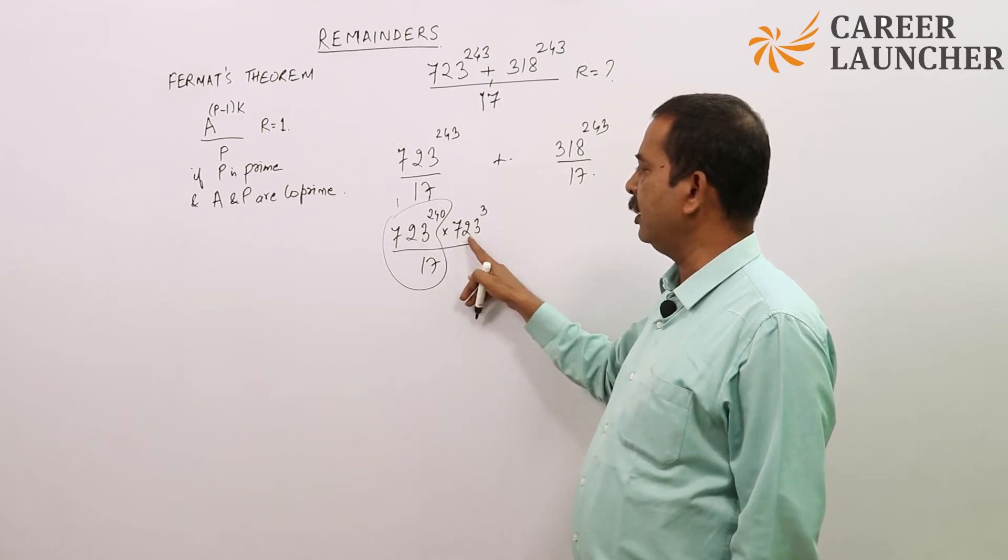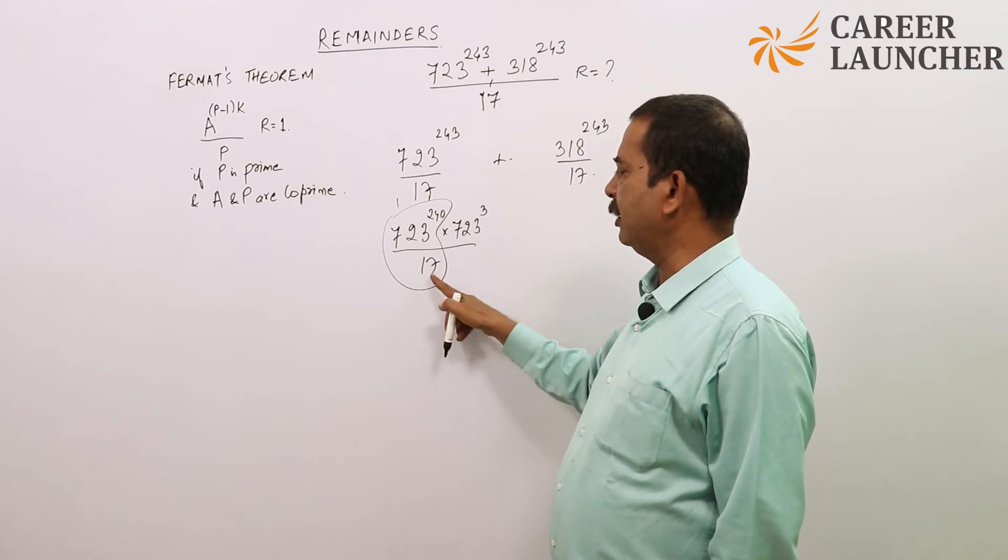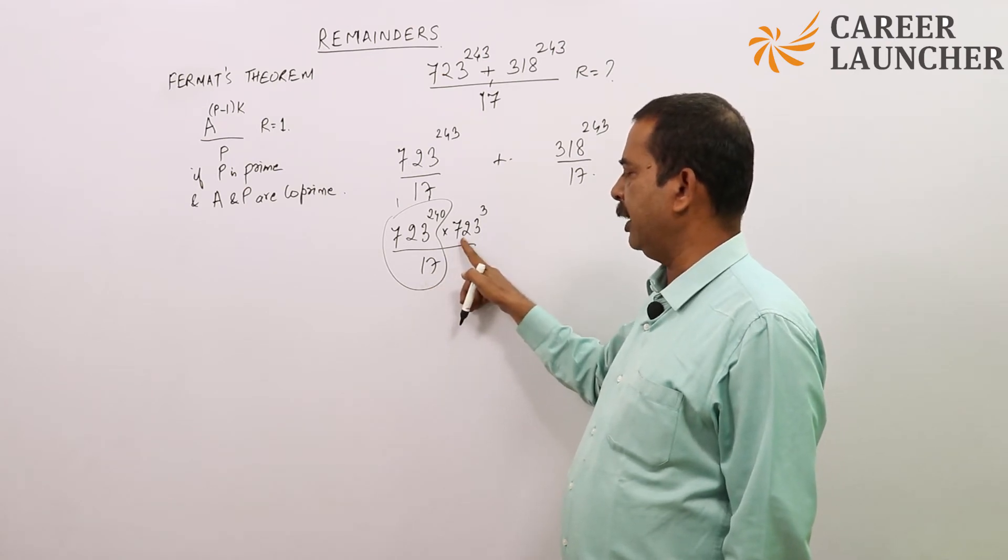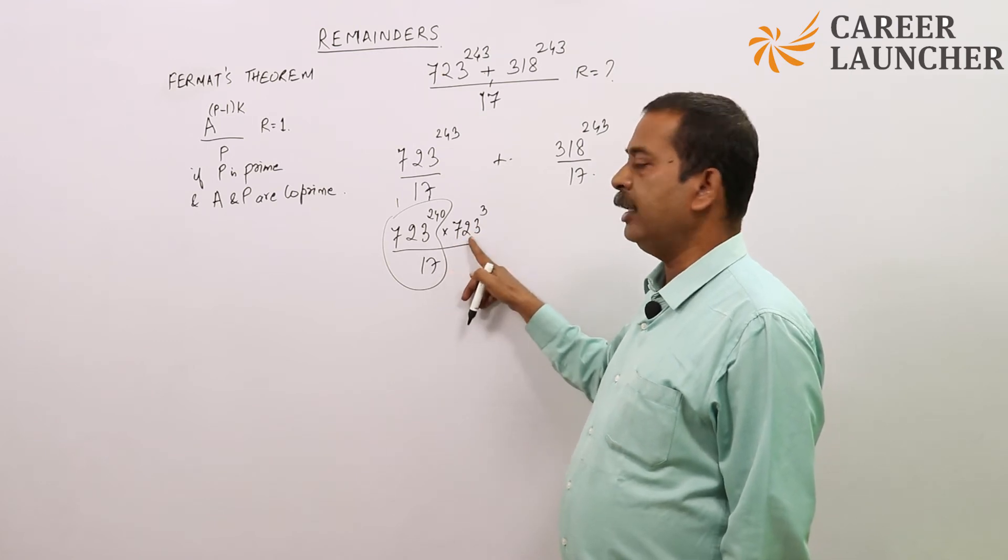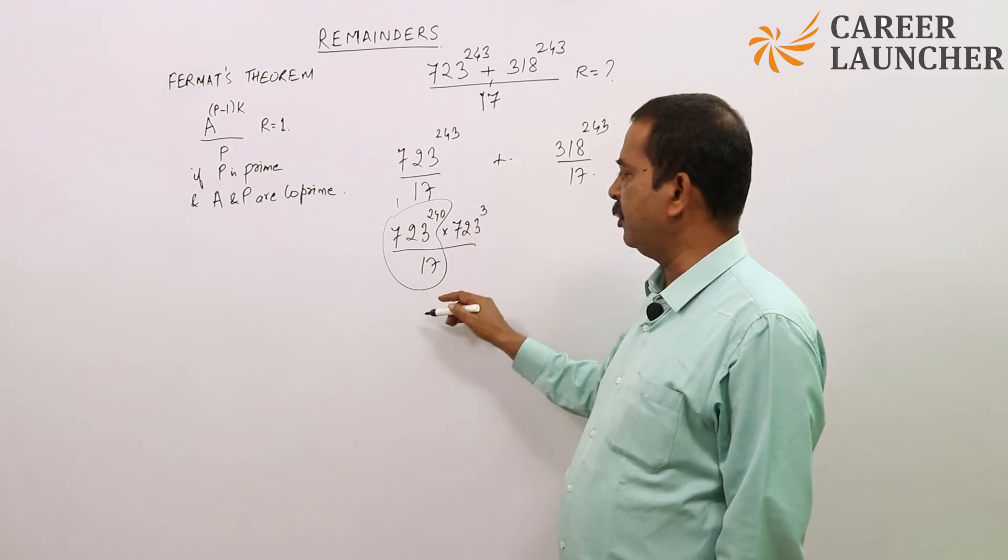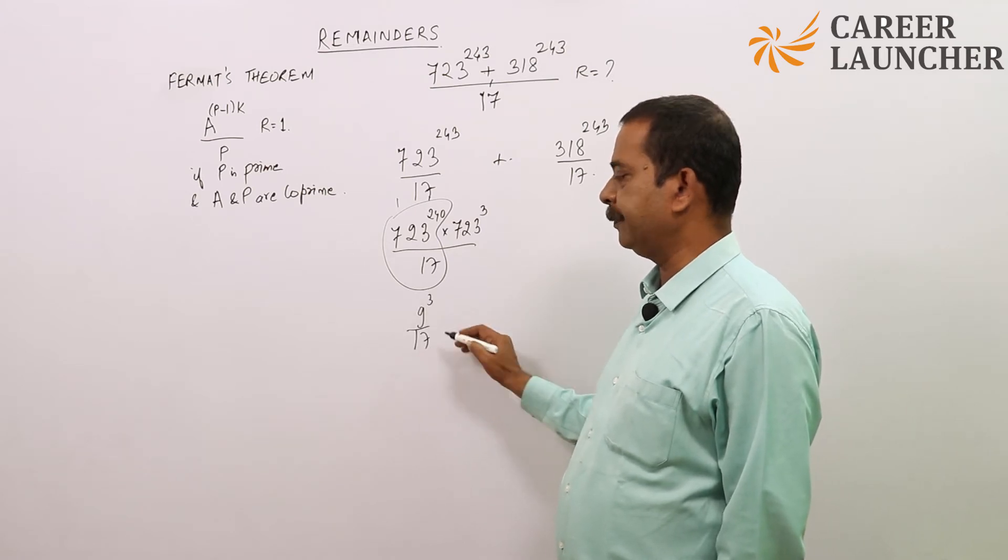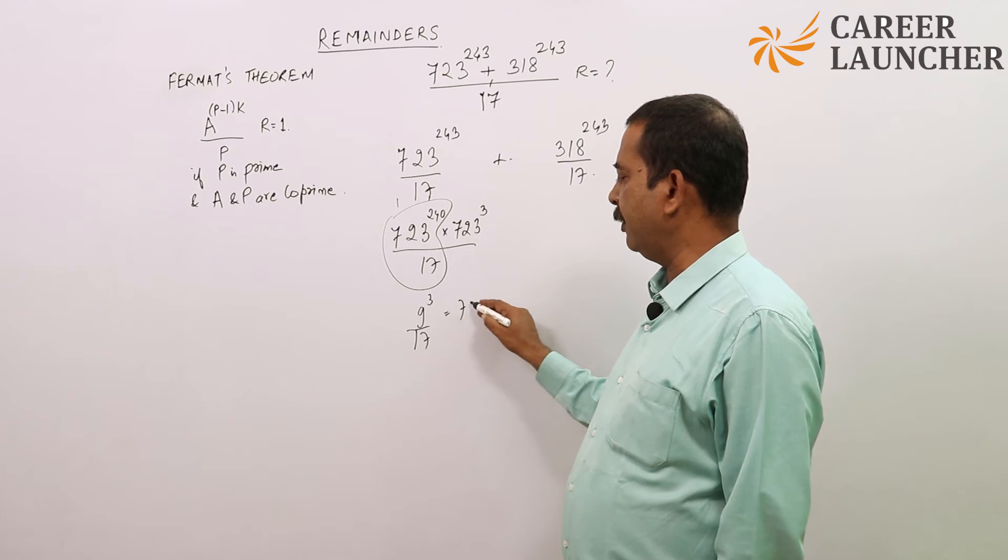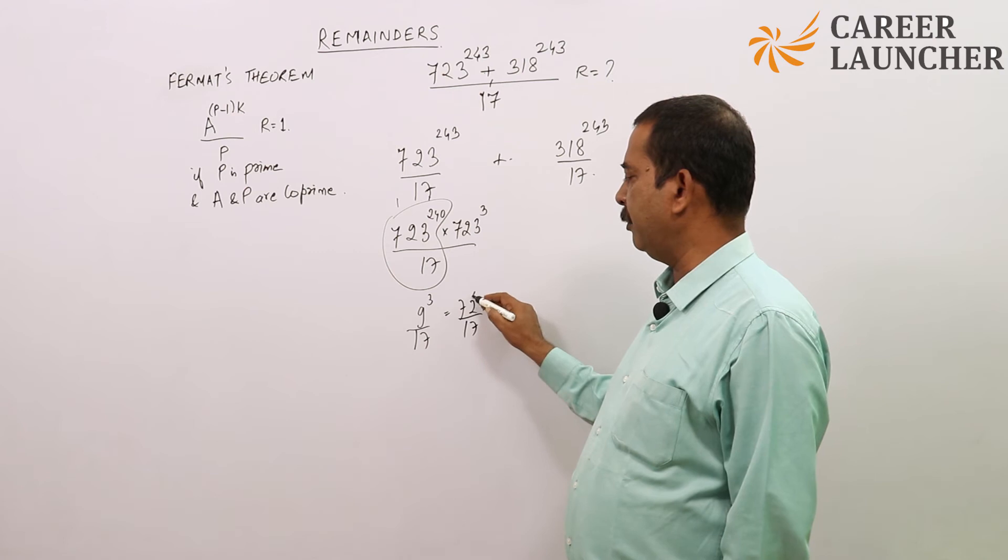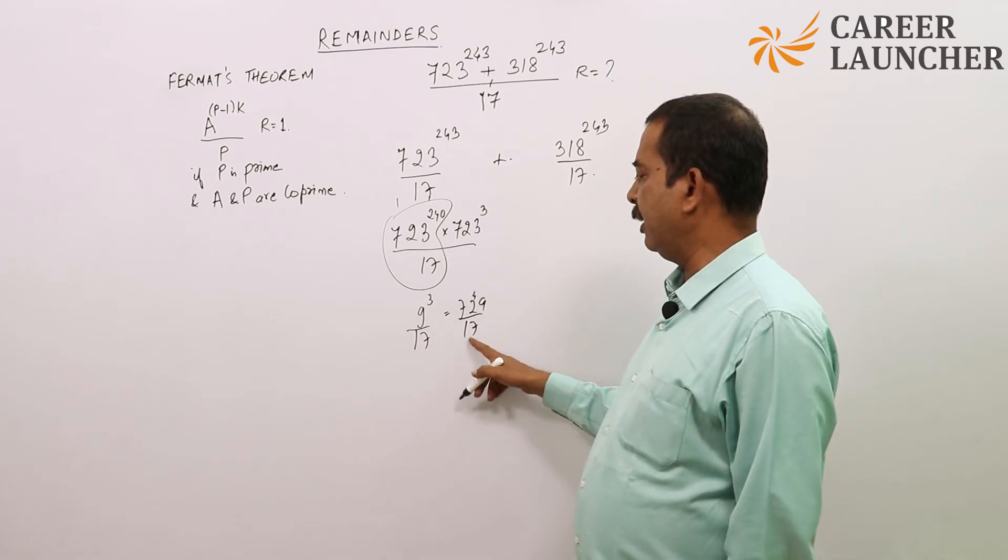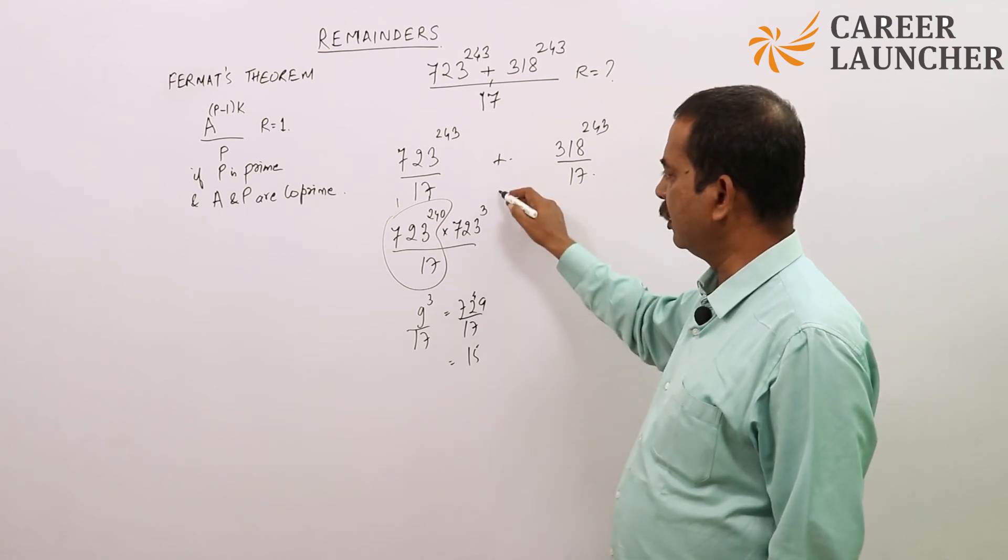This part is going to give me remainder 1. So what I'm left with is only 723 to the power 3 divided by 17. If I simplify this, 17 into 42 is 714, 9 bache ga, which means this part gives me remainder 9 cube divided by 17. Finally I get 729 as 9 cube divided by 17. 17 into 42 is 714, I will be remaining with 15. When I divide this by 17 I will get final remainder as 15.